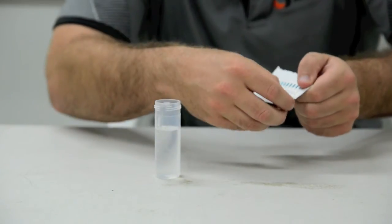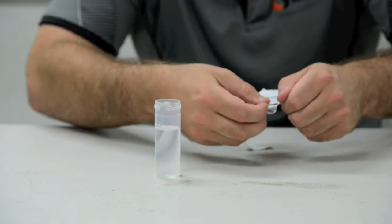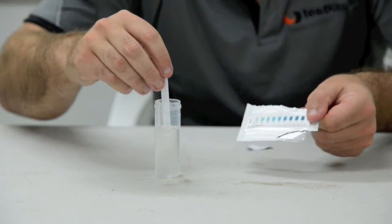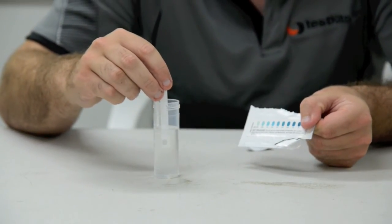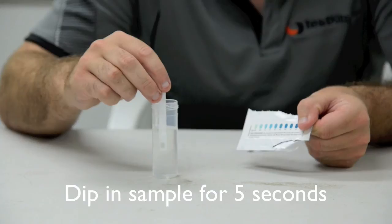To carry out our tests, first fill your sample tube with your sample water, remove test strip from packaging, making sure not to tear through the color chart.